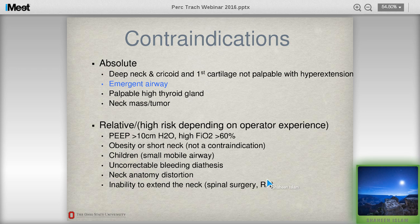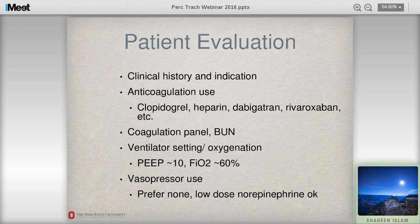Emergency airway was previously a contraindication; however, in the last couple of years, at least three publications showed it can be done by trauma surgeons easily without many complications. Relative contraindications include high ventilator settings — for example, PEEP greater than 10, high FiO2 greater than 60% — obesity or short neck, children, bleeding or coagulopathy that cannot be corrected, difficult neck anatomy, and inability to extend the neck, such as with spinal surgery or rheumatoid arthritis.